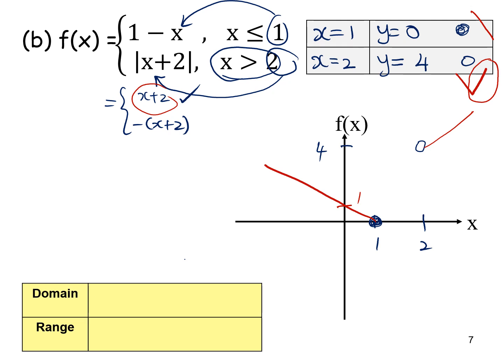The domain is from negative infinity to 1 closed, union open 2 to infinity — there is no graph between 1 and 2. For the range: below y equals 0 there is no graph, so the range starts at y equals 0 closed, union 4 open to infinity.